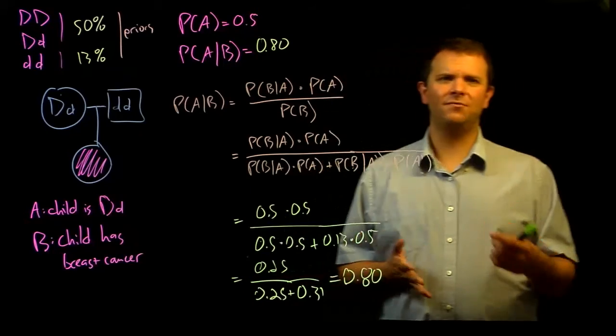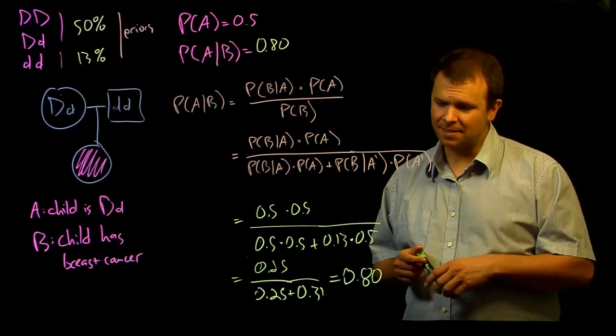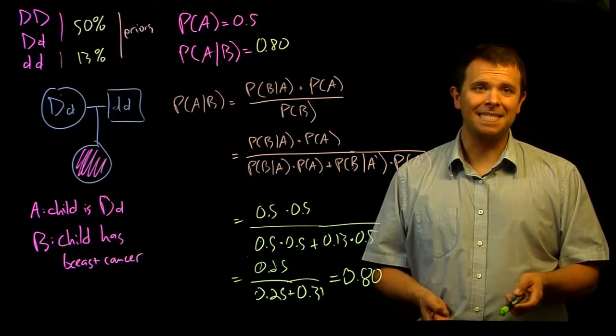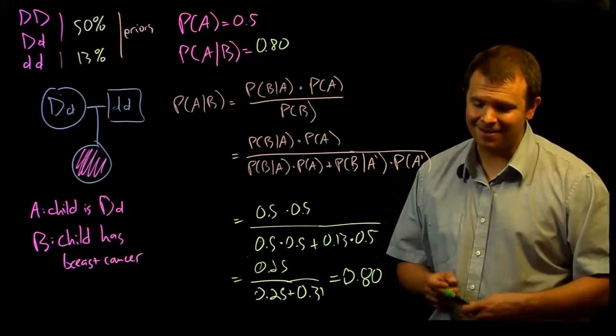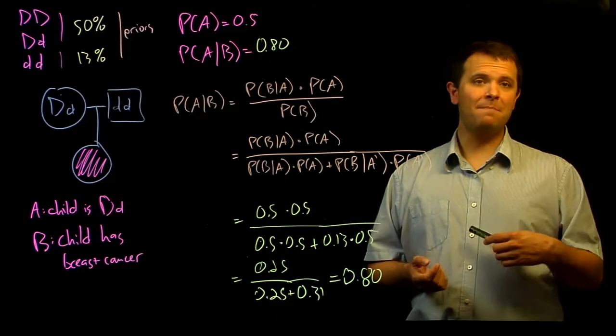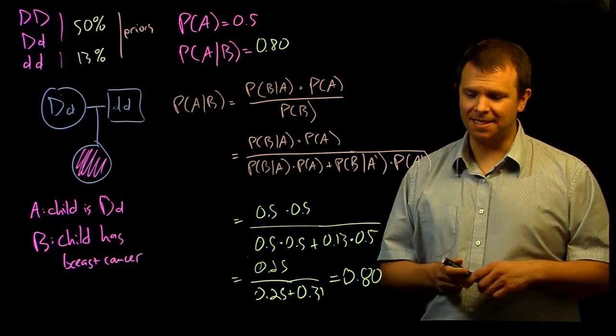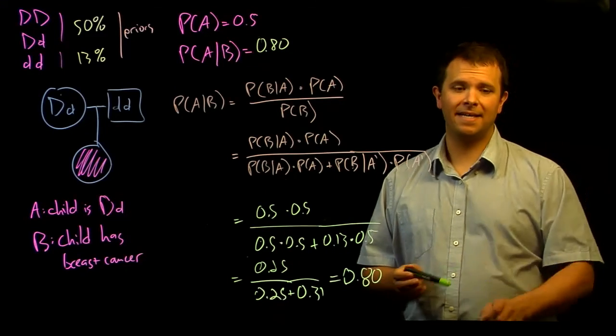So much of genetics is based on random outcomes. But the entire science of probability and statistics is based around understanding random things. This may be our first encounter with the intersection between genetics and statistics, but it is far from the last.